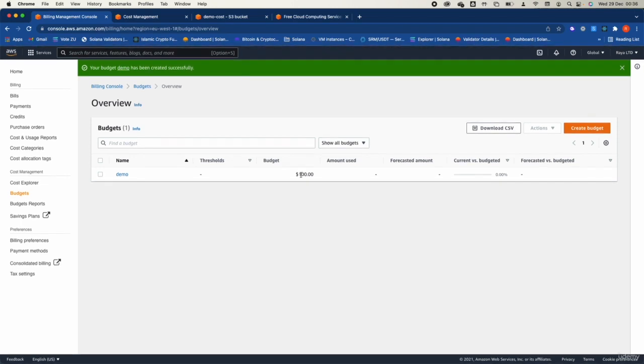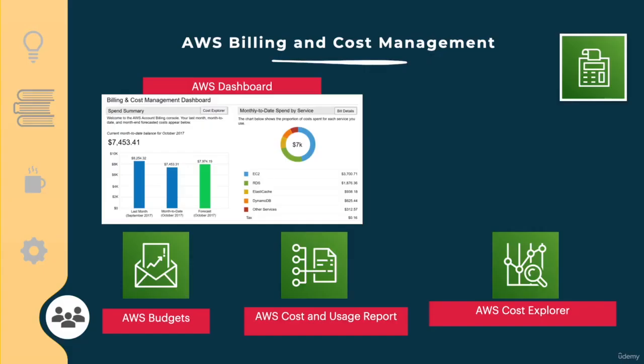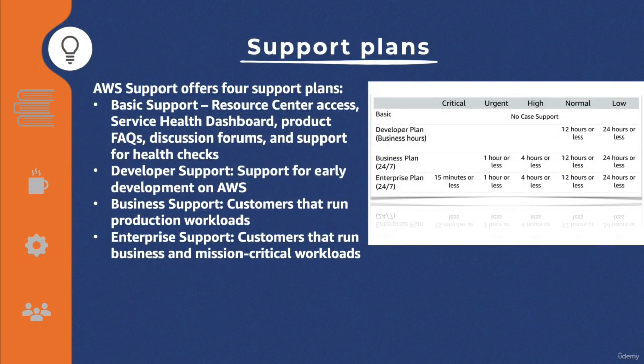There are four support plans to understand for the exam: Basic support, which every user gets upon joining the AWS management console; Developer support; Business support, which includes a dedicated technical support team; and Enterprise support, which is for mission-critical workloads.